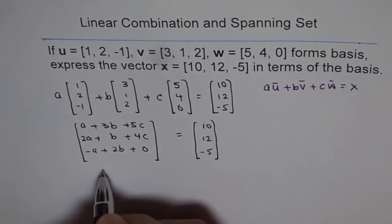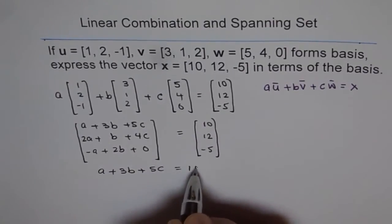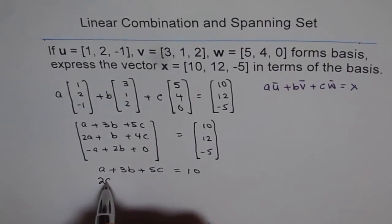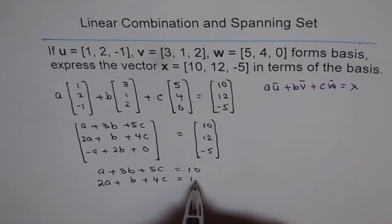So let me write down these equations now, a, plus 3b, plus 5c, equals to 10. Second one is 2a, plus b, plus 4c, equals to 12.